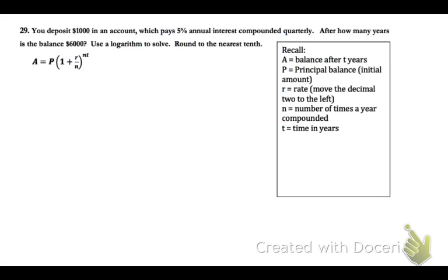Number 29. You deposit $1,000 in an account which pays 5% annual interest rate. After how many years is the balance $6,000? Use a log to solve around to the nearest tenth. Recall what everything stands for in this formula. So A is our ending amount. So we will put $6,000. Ending amount is $6,000. Beginning amount is $1,000. Our rate as a decimal is 0.05, compounded quarterly 4, and then raised to the 4, and the years is what we're solving for. So that's why we're going to use a logarithm because we have to solve for the exponent.